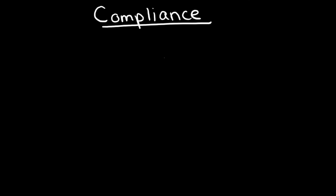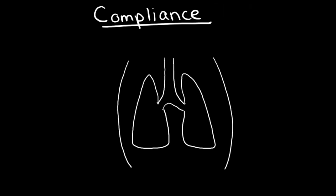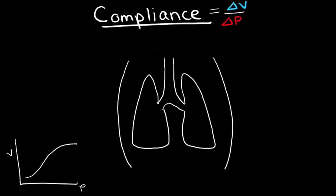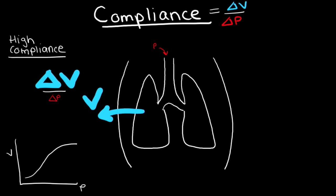We just said that the plateau pressure distends the alveoli, but what determines how much they distend? It's determined by compliance. Compliance is an intrinsic property of the patient's lungs and chest wall, and it can be thought of as how stiff or stretchy the lungs and chest wall are. Our pressure-volume curve reminds us of the relationship between pressure and volume, which is dictated by compliance. The equation for compliance is change in volume over change in pressure. If only a small amount of pressure is given but there is a large change in volume, then compliance is high and the lungs are stretchy.